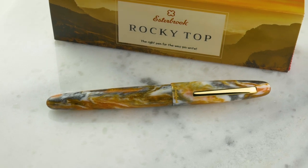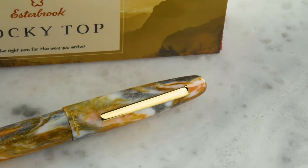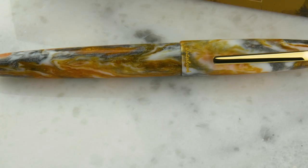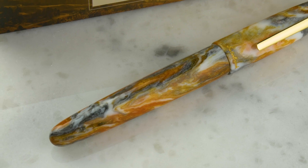First shipment of the new Esterbrook Estee in Rocky Top and Peacock, but only the oversized came in first. The standards are coming soon. The Rocky Top is just great - it's gray and orange and white, made in the Diamond Cast material so it's sparkly. It's really pretty with some marbling and depth.